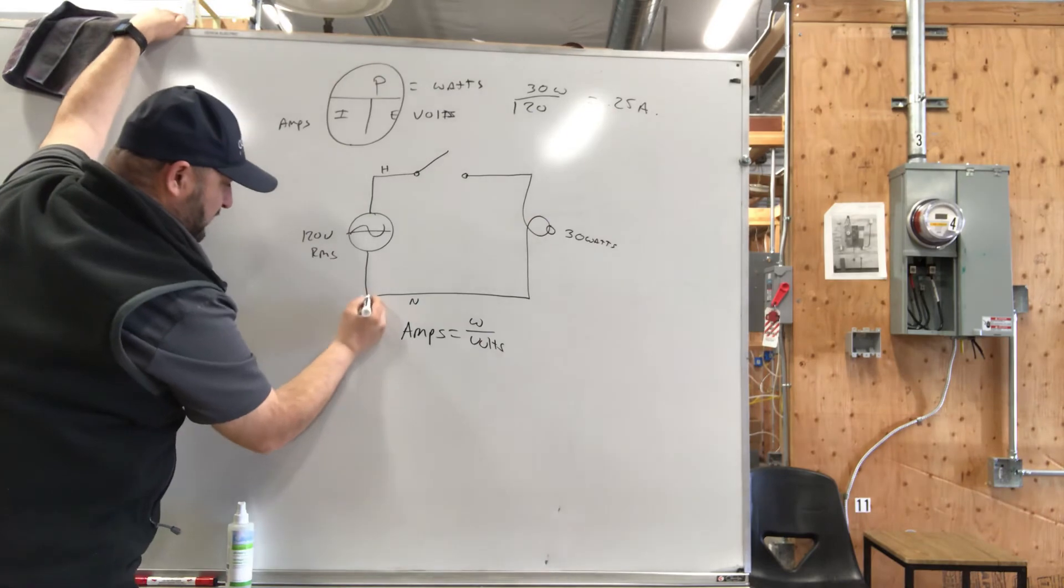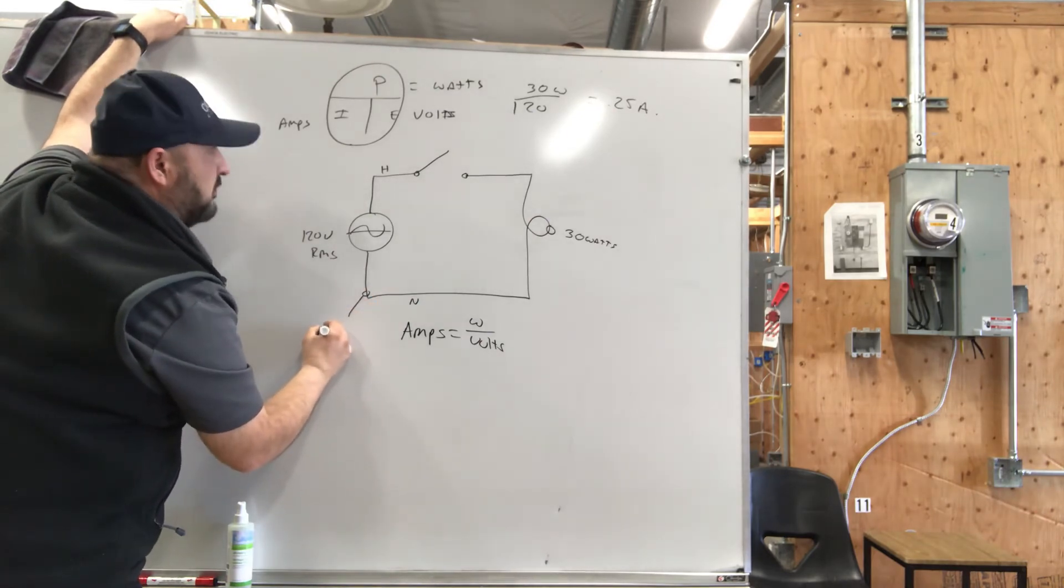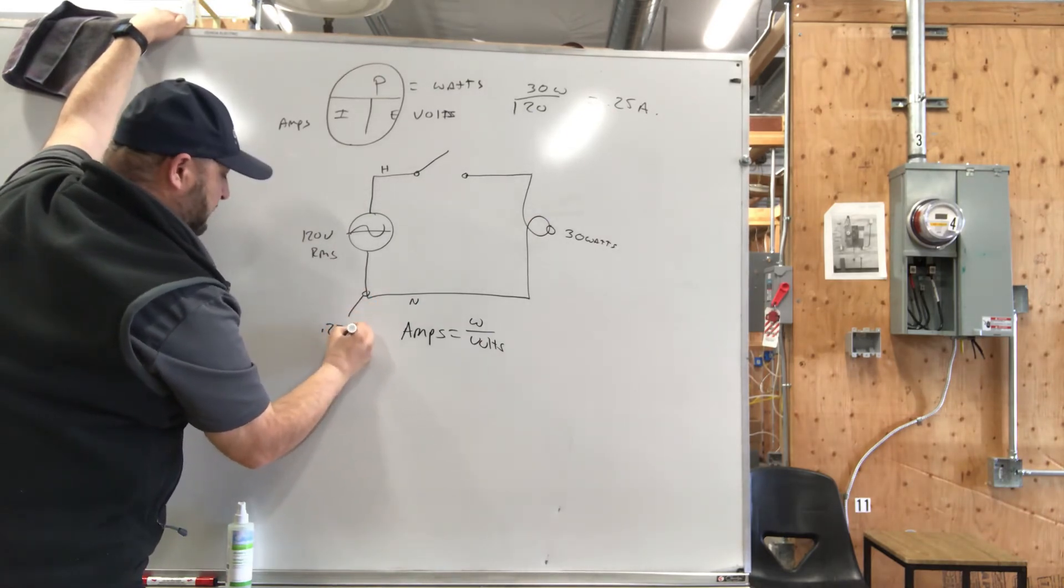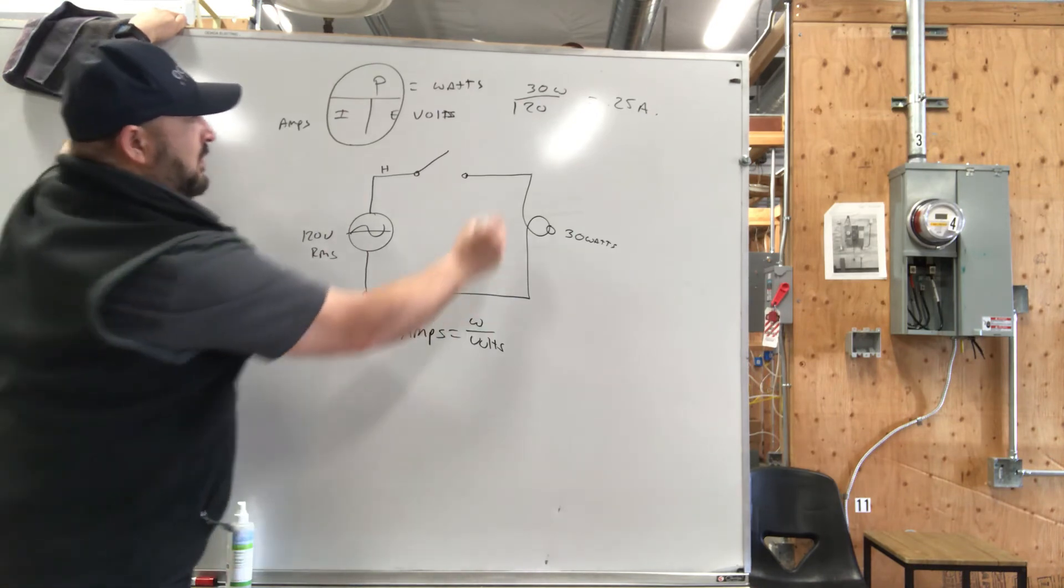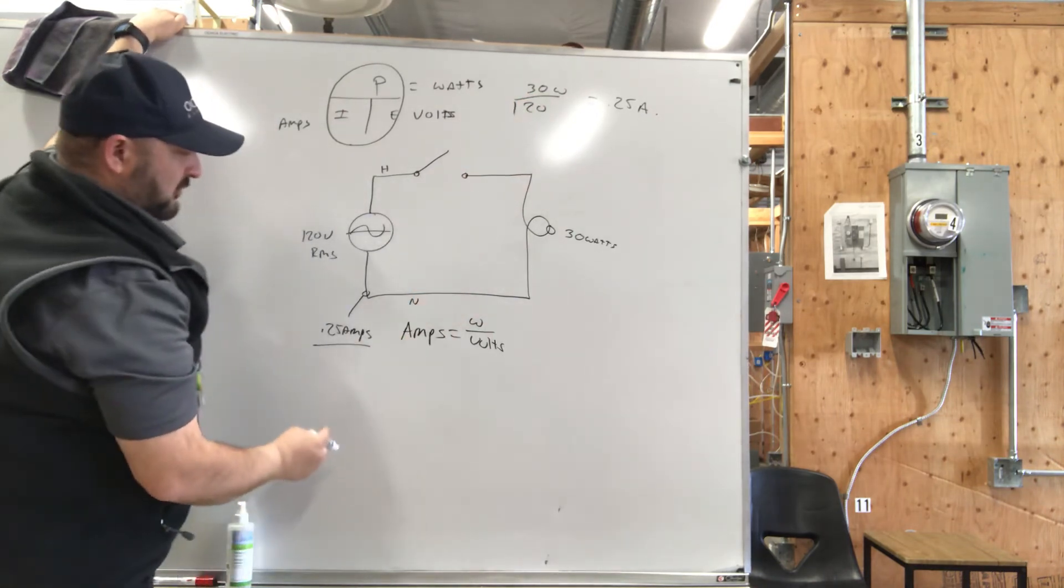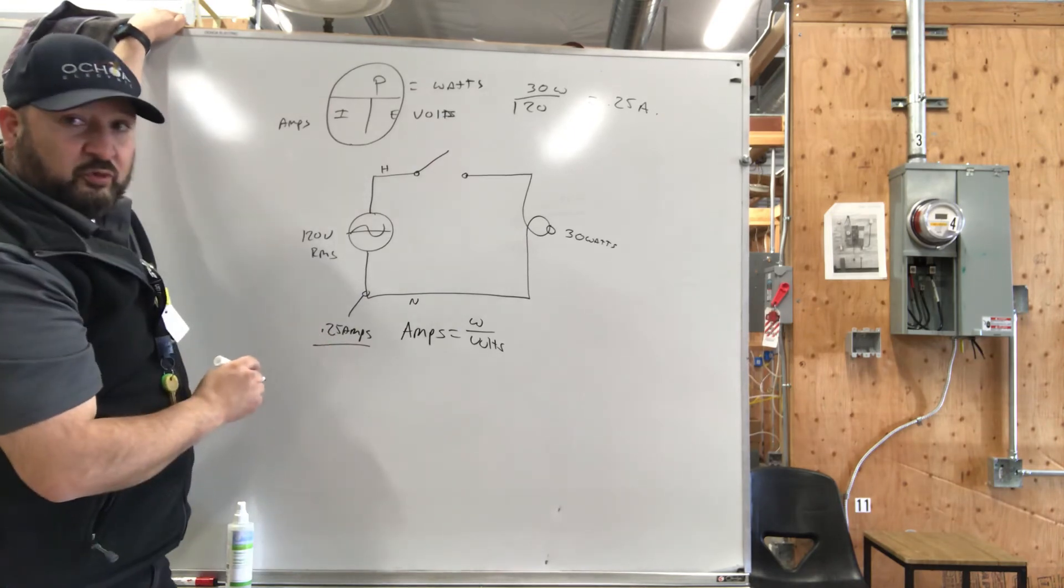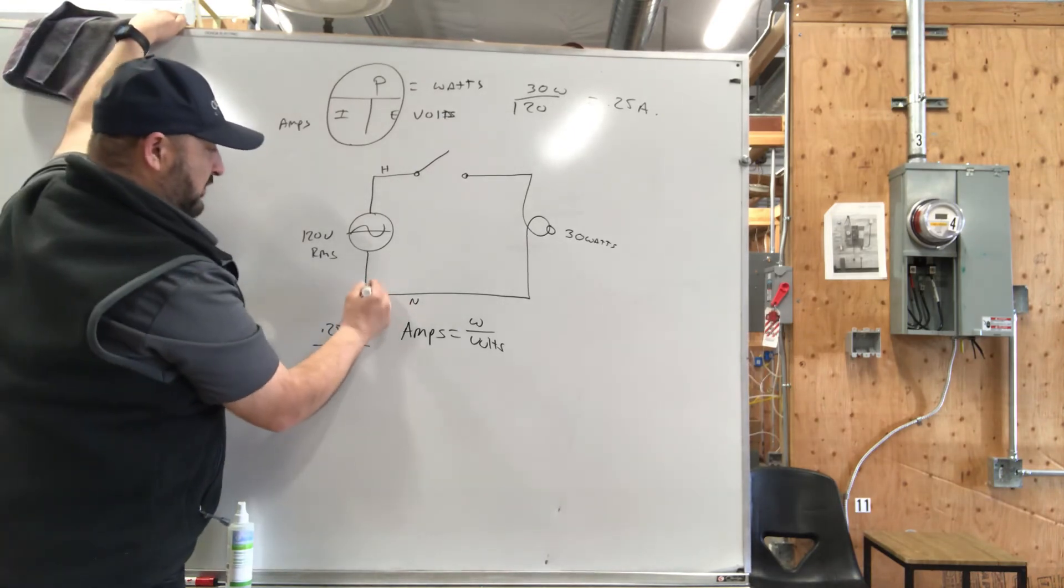So now, the amps right here is 0.25 amps. That's the current coming through your system.